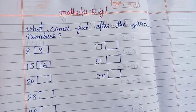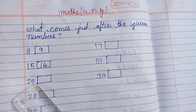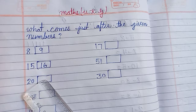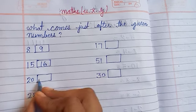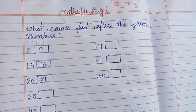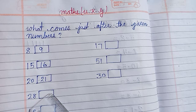Now I am going to solve next question. Here is 20. After 20 there will be 21. Here is 28. After 28 there will be 29.